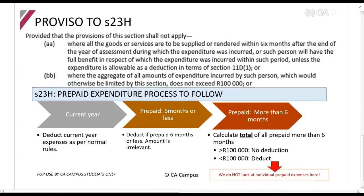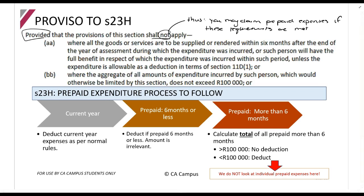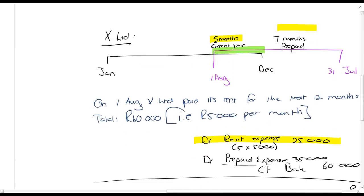It says provided that the provisions of this section shall not apply. This section says you may not claim prepaid expenses. So if this section does not apply, it means you may claim prepaid expenses. Thus, you may claim prepaid expenses if these requirements are met. The first one says where all the goods or services are to be supplied or rendered within six months after the end of the year of assessment during which the expenditure was incurred.